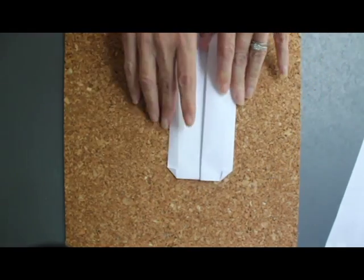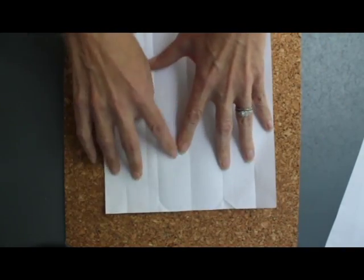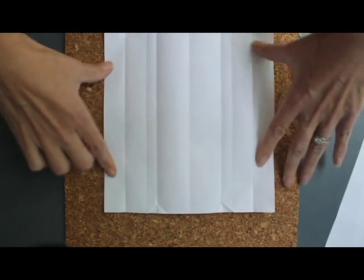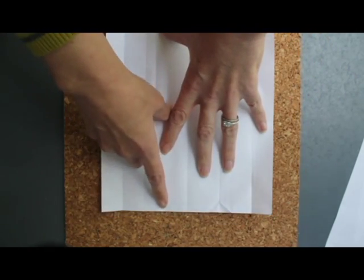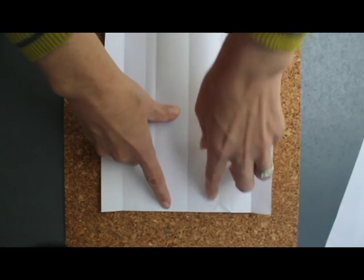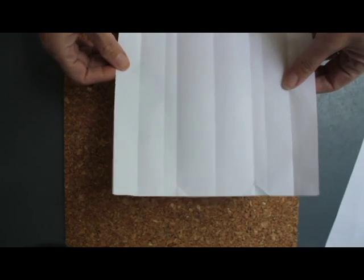Now open it up and you will see that there are different shaped rectangle strips. At the top you'll see that you'll have these two triangle shaped folds.